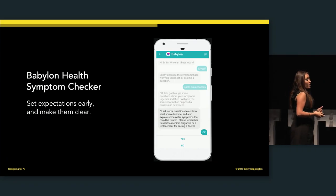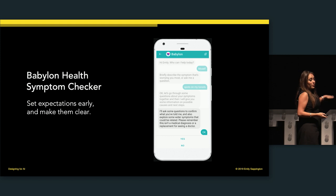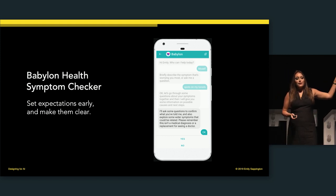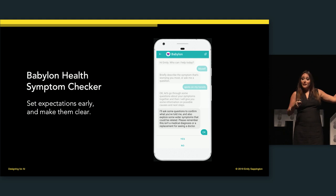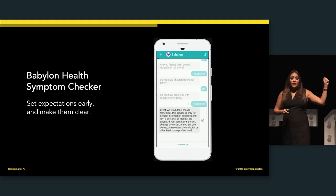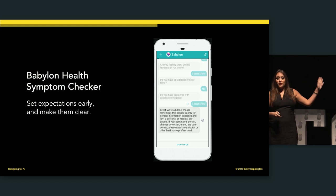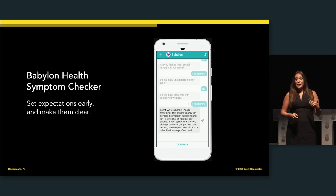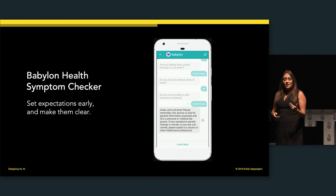Maybe it's doing things like adding a beta tag, or just being mindful of not shipping a feature at certain times. At Babylon, we've changed our interface — we had a chat interface and we found it really important to set expectations that though it looks like you're messaging, there's not an actual doctor on the other side because this was AI. We wanted to remind people of that and set expectations so we didn't over-promise something.